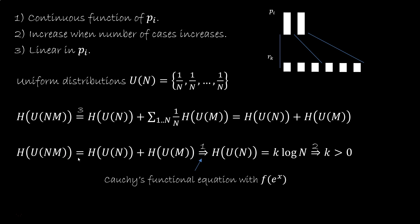So the product of the cases becomes the sum of the variability. We can use property 1, continuity, to use Cauchy's functional equation, which tells us that the logarithm is the only function, apart from a constant k, for which the function of the product is the sum of the function. Property 2, monotonicity, tells us that the constant k must be positive.